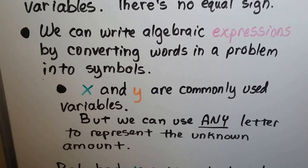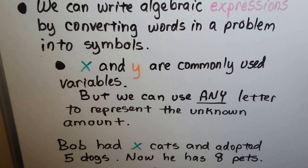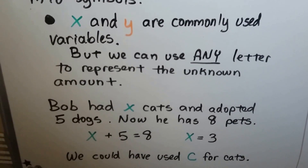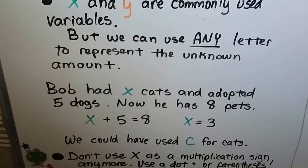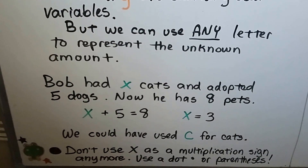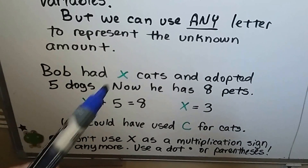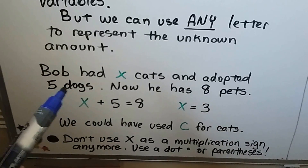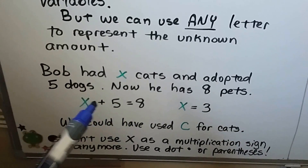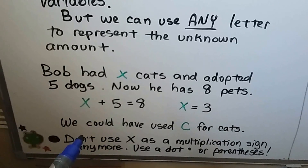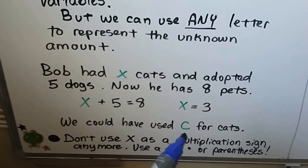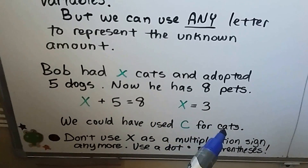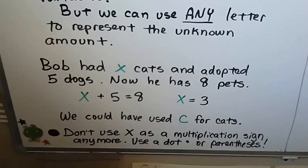We can write algebraic expressions by converting words in a problem into symbols. x and y are commonly used variables, but we can use any letter to represent the unknown amount. If Bob had x cats and adopted 5 dogs, he now has 8 pets. We can find the number of cats — x must equal 3. We could have used c for cats to represent cats, and a lot of times in algebra you can use the letter for that thing to help you remember what you're looking for.